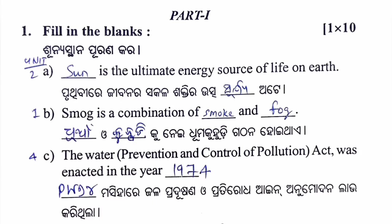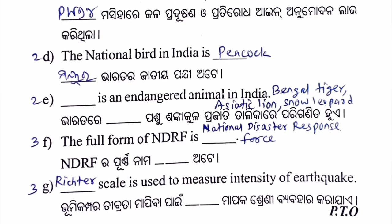Unit question on environmental acts: Air Pollution Act, Water Pollution Act. The national bird of India is the peacock — Unit 2, biodiversity and conservation of biodiversity. An endangered animal in India: answer — Bengal tiger, Asiatic lion, or snow leopard — Unit 2, biodiversity.